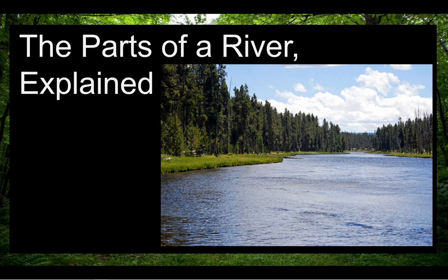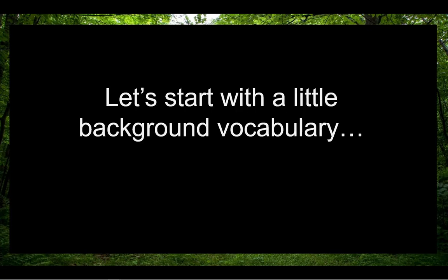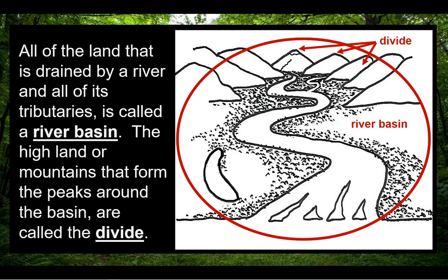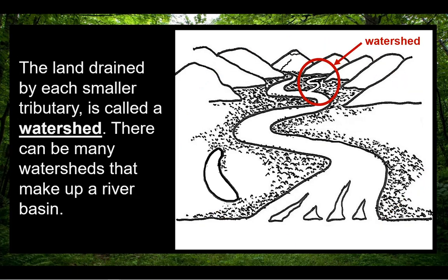This video is about the parts of a river. Let's start with a little background vocabulary. All of the land that is drained by a river and all of its tributaries is called a river basin. The high land or mountains that form the peaks around the basin are called the divide. The land drained by each smaller tributary is called a watershed, and there can be many watersheds that make up a river basin.